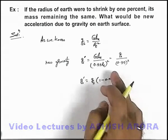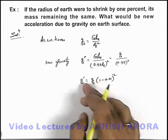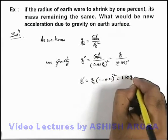Since 0.01 is very small, we can use binomial approximation with power -2, giving us 1.02g.